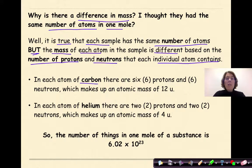In each atom of carbon, there are 6 protons and 6 neutrons, which make up an atomic mass of 12 atomic mass units. In each atom of helium, there are 2 protons and 2 neutrons, which makes up a mass of 4 atomic mass units. So the number of things in one mole of a substance is always 6.02 times 10 to the 23rd.